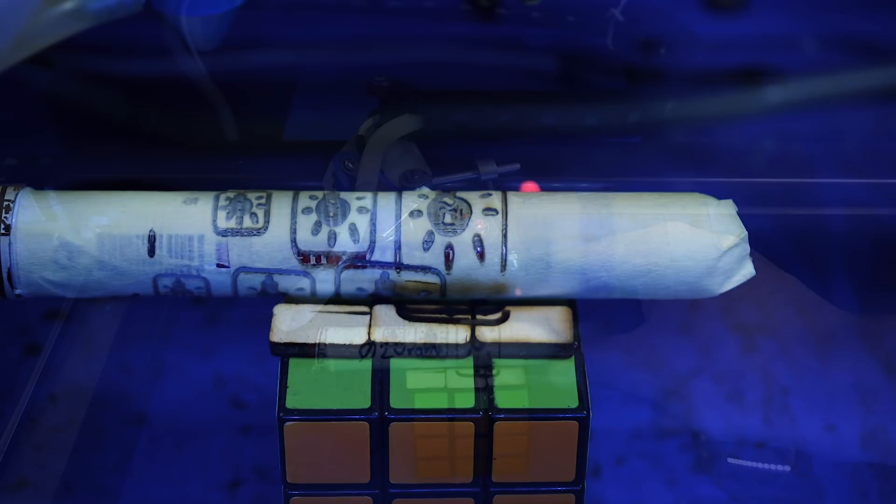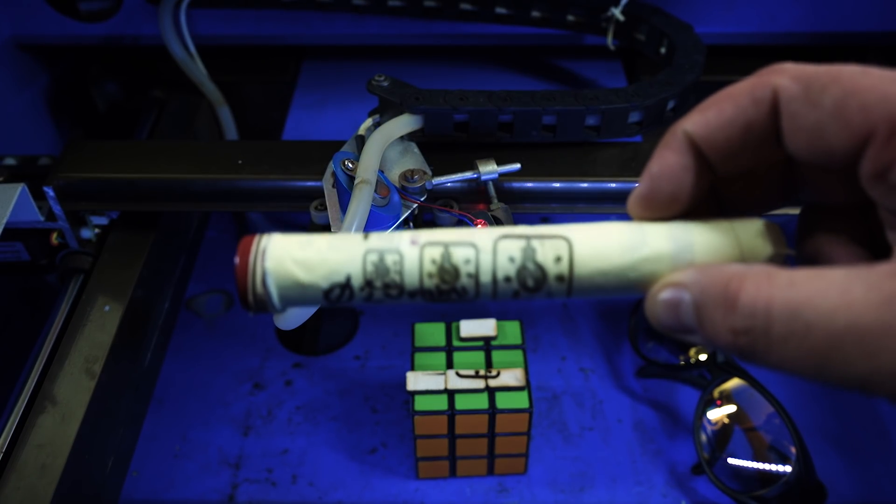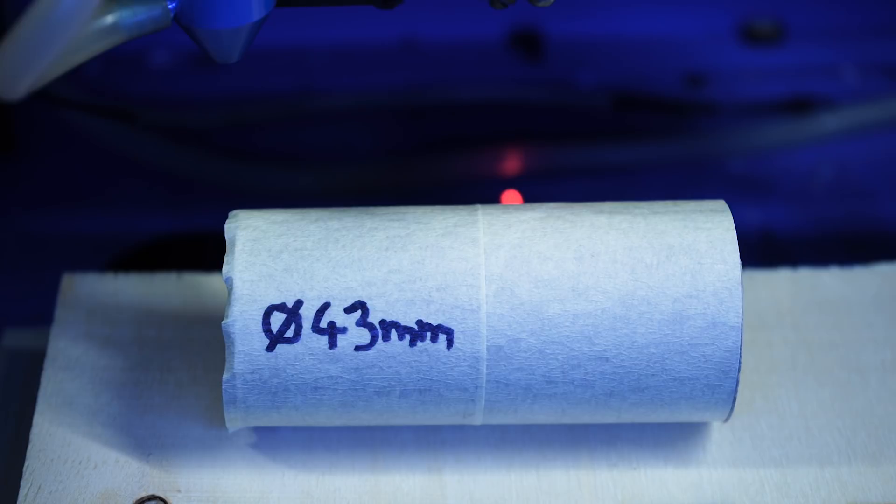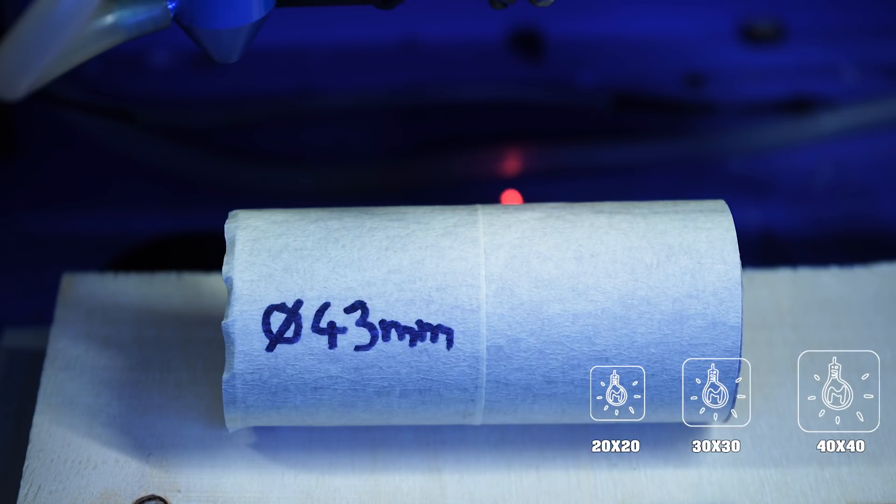Number one is done. We will have a detailed look after I've finished all of them. So this is 43mm and the logos are 20x20mm, 30x30mm and 40x40mm. Let's give this a try.